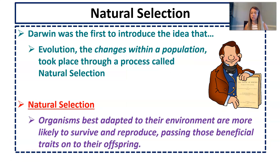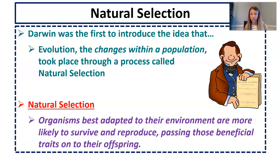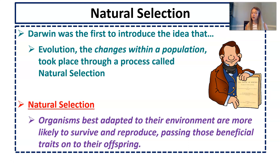Natural selection. Darwin was the first person to really introduce this idea that evolution — the changes within a population — took place through a process called natural selection. Let's make sure we remember what natural selection is: organisms that are best adapted to their environment are more likely to survive. If they're more likely to survive, they're more likely to reproduce, passing on those beneficial traits to their offspring.